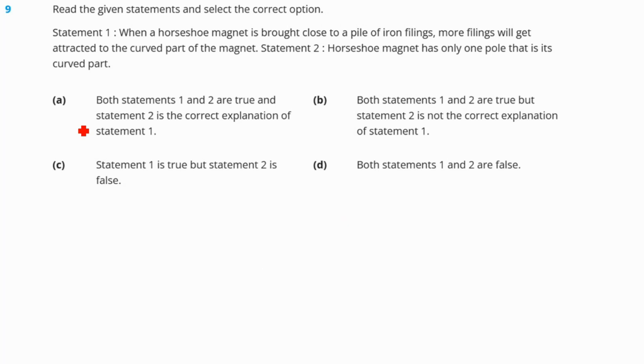Question number 9. Refer to the given statement and select the correct option. Statement 1 says, when a horseshoe magnet is brought close to a pile of iron filings, more filings will get attracted to the curved part of the magnet. Statement 2 says, horseshoe magnet has only one pole, that is its curved part. If you know that horseshoe magnet, it looks like a U shape. And we know the maximum strength of the magnet is at the poles. The first statement is wrong because the maximum strength is in the poles, not in the U shape. And statement 2 also, it is not having one pole. All the magnets have two poles. No matter how small the magnet is, all the magnets have two poles. So none of the statements are correct here. Our answer is option number D.